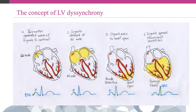Depending on the methodology used, the onset of myocardial contraction can be identified as the moment when the electrical impulse reaches the contracting element — the onset of electrical activation — or the time when a region starts to thicken or the corresponding endocardium starts to move inwards — the onset of mechanical activation.